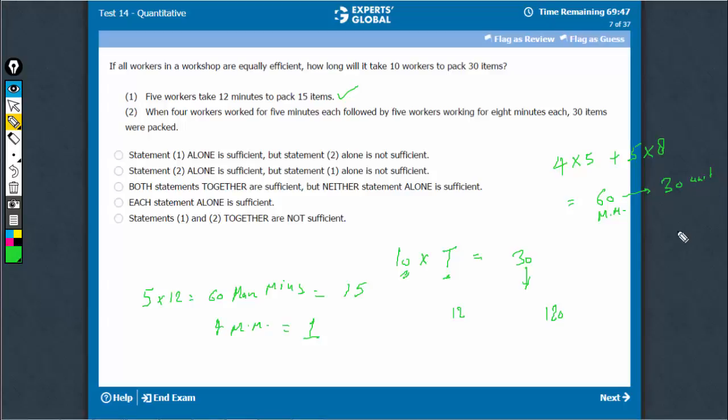1 unit of work is equivalent to 2 man minutes. Coming to this original question that has to be answered, 30 units of work would mean 60 man minutes. 10 is here, so t will have to be 6. So that we get 60 man minutes.